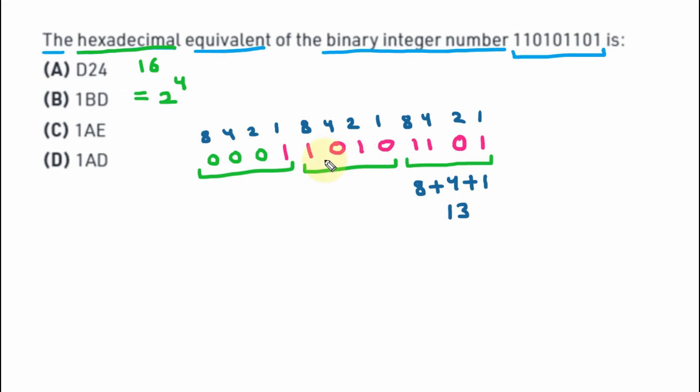Similarly, for the next block, 8 ones are 8, plus 4 times 0, ignore it. 2 ones are 2, plus 1 times 0, so ignore it. 8 plus 2 is 10.